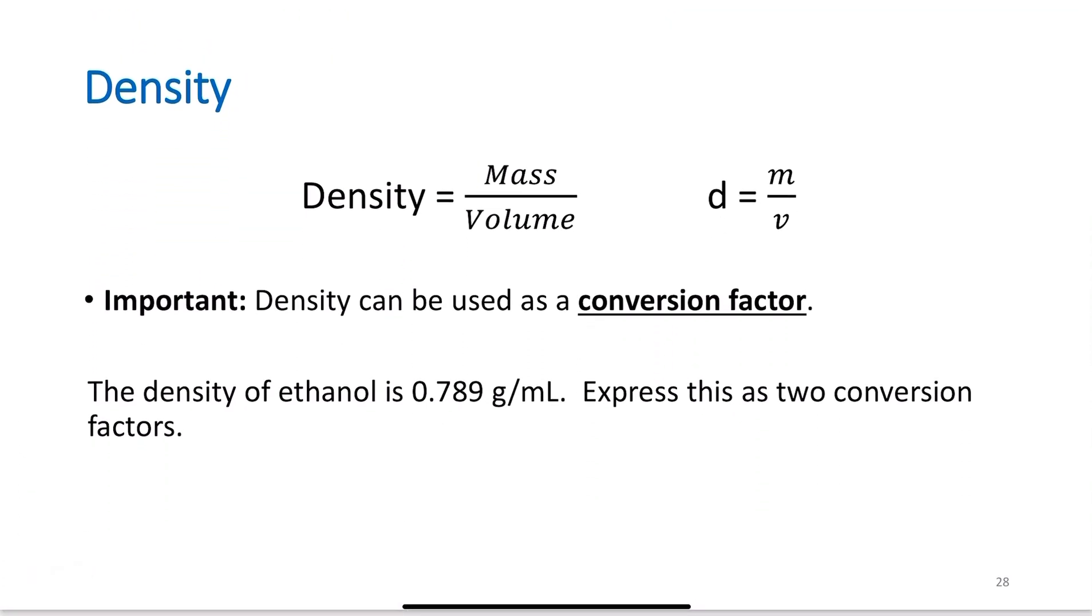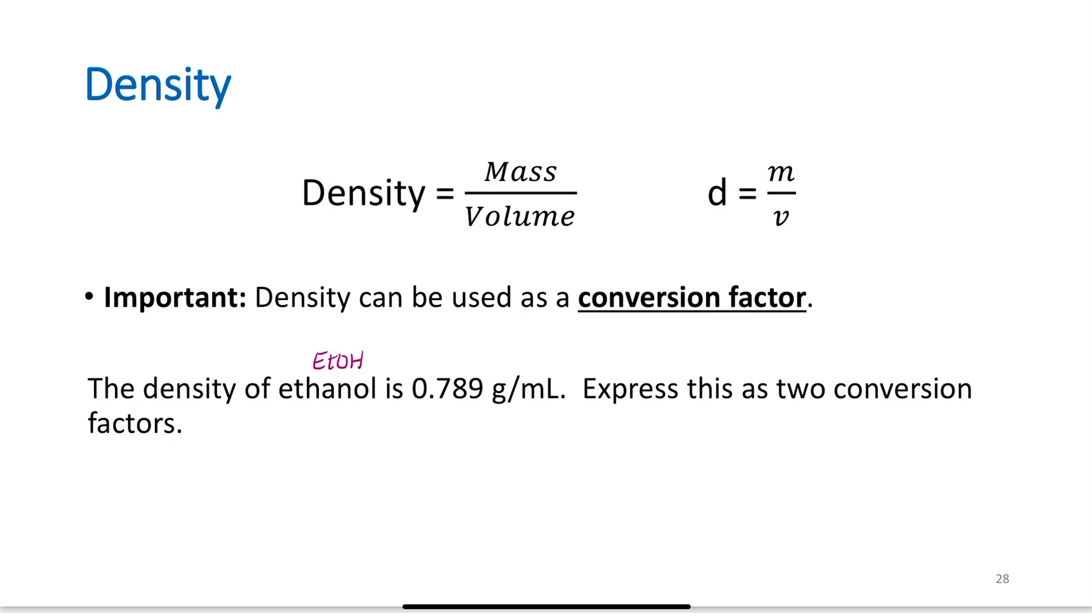Density, you do have to have this memorized. Density is mass over volume. You should be able to calculate this any which way. We're going to use this throughout our conversion factors this semester. For example, density of ethanol is 0.789 grams per mL. Express this as two conversion factors. First, I abbreviate ethanol as ETOH - uppercase or lowercase, doesn't matter. If I want to express this as two conversion factors, I could write 0.789 grams of ethanol to 1 mL of ethanol. Notice I'm writing ethanol after the unit. That's because by chapter 2 we'll start converting between different species, so I want you ready for that.